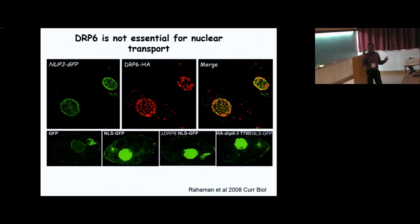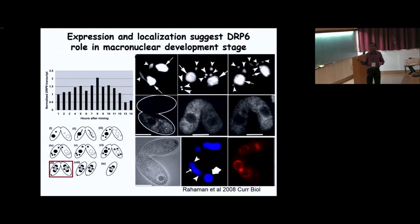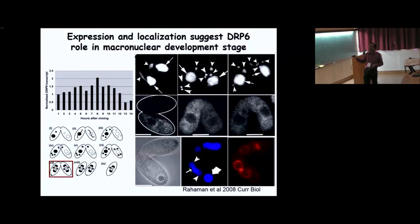To understand what DRP6 does in the nuclear envelope, we performed expression analysis and localization studies. Expression is highest at the stage where the new macronucleus is forming — the nuclear expansion stage. Early in conjugation, DRP6 falls off the nuclear envelope and becomes cytoplasmic puncta, remaining so until the macronuclear expansion stage. This expression pattern and localization strongly suggest a role during macronucleus formation.